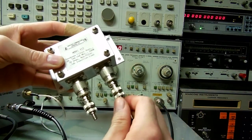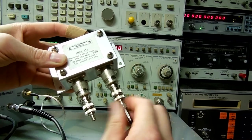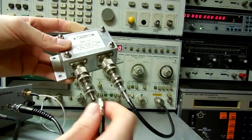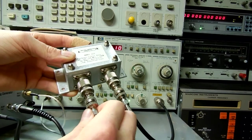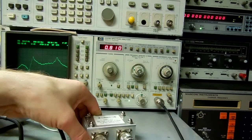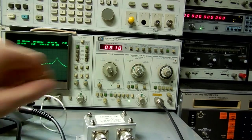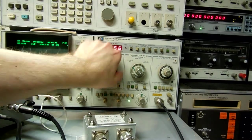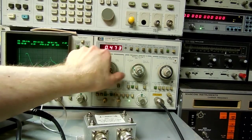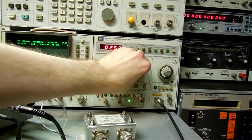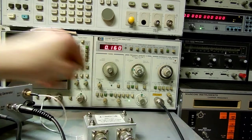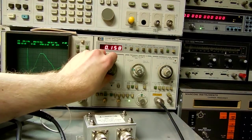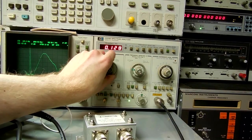Here's a 2 meter bandpass filter that I have. This is industrial communication engineers model 413, 144 to 148 megahertz. You can kind of see it covers the 2 meter ham band.